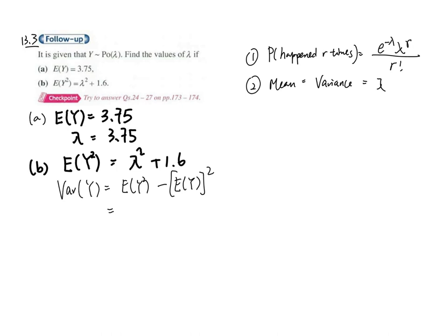Since it is in the Poisson distribution, which means that the mean and the variance equals to lambda, so we can write it back to here. We have lambda here and then we have lambda here. This one is given, so we can put it here. So it would be lambda squared plus 1.6.